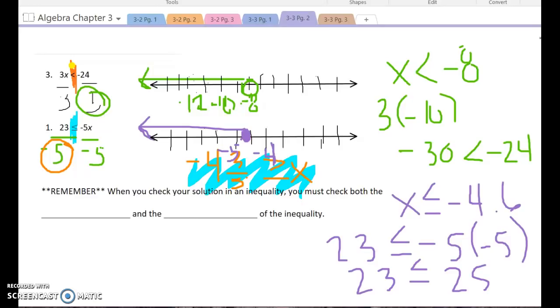So I found my end point. And then I checked something that was in the right direction, which that brings us to this last little piece here. It says, remember, when you check your solution in an inequality, you must check both the end point. So that's the one that tells me where my circle, either filled in or open, is going to go. I have to check the end point and the direction.